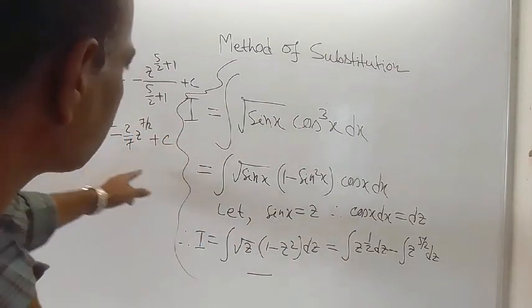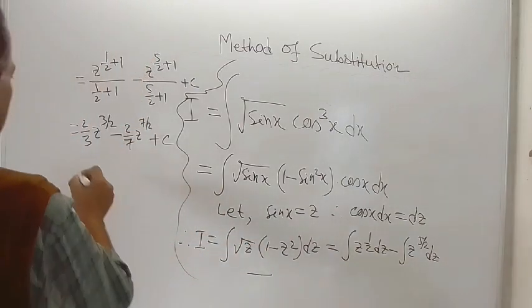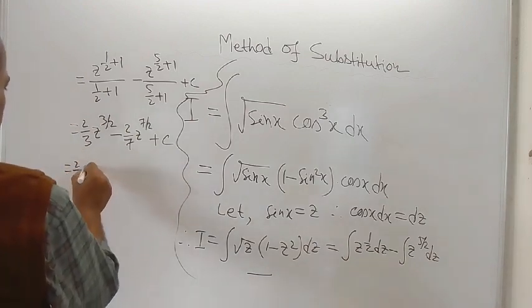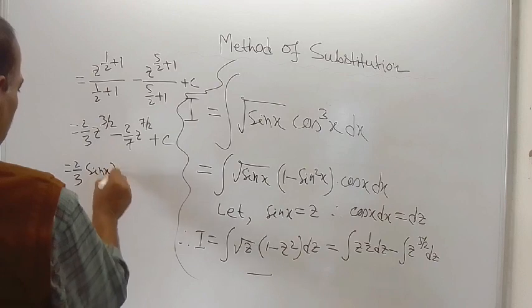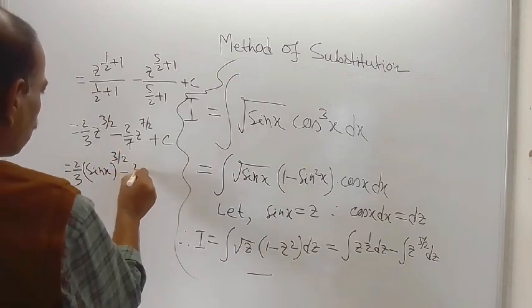And now you know that z is equal to sin x. So just put the expression for z in terms of x. So this is 2 by 3 sin x whole to the power 3 by 2 minus 2 by 7.